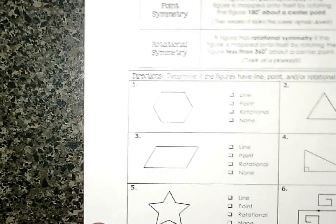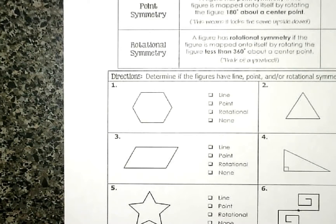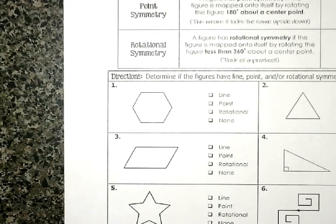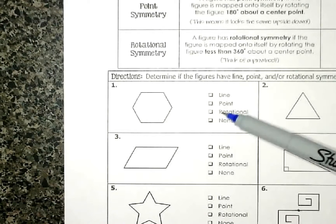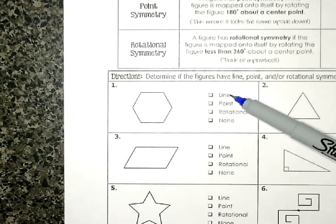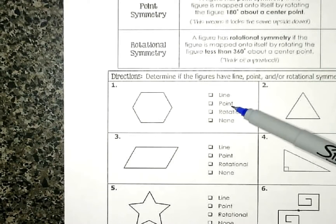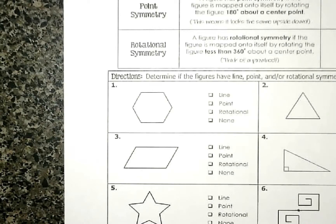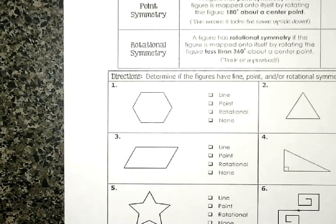What you're going to do is look at a figure and determine: does it have line, point, rotational, or none? Some figures have only one type, some have two, some have three, and none will have all of them. There are two ways to approach this: you can go through each figure individually checking all three types, or personally I like to go through all figures checking for one type at a time. I'm going to go one type at a time so I don't have to shift gears on what I'm looking for.